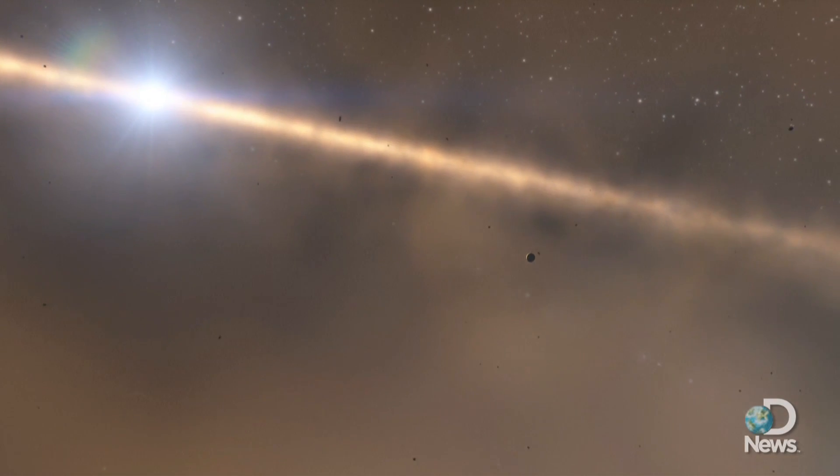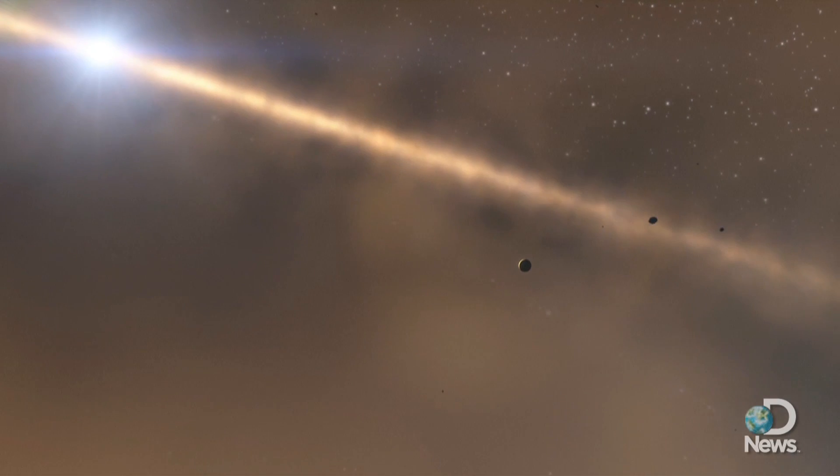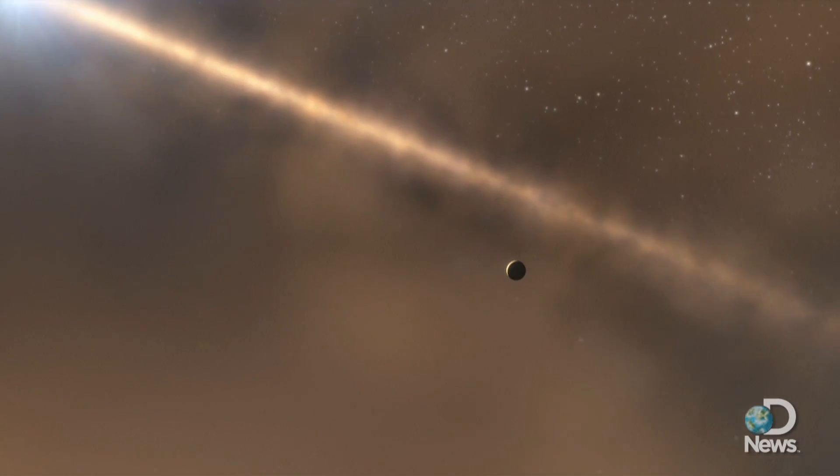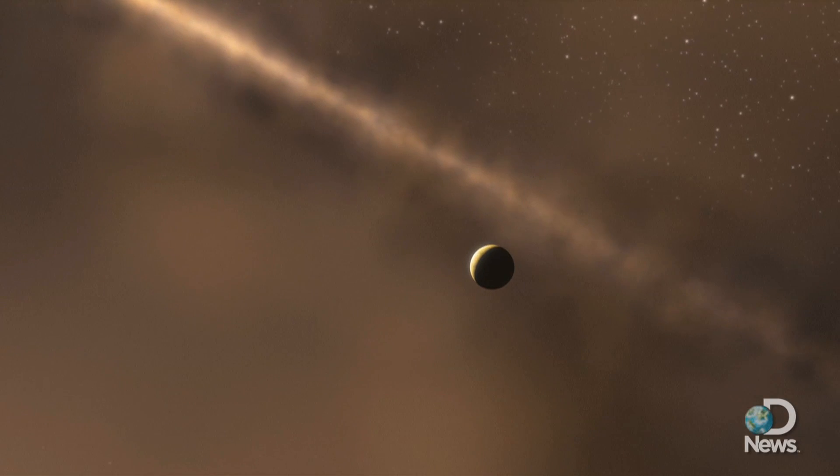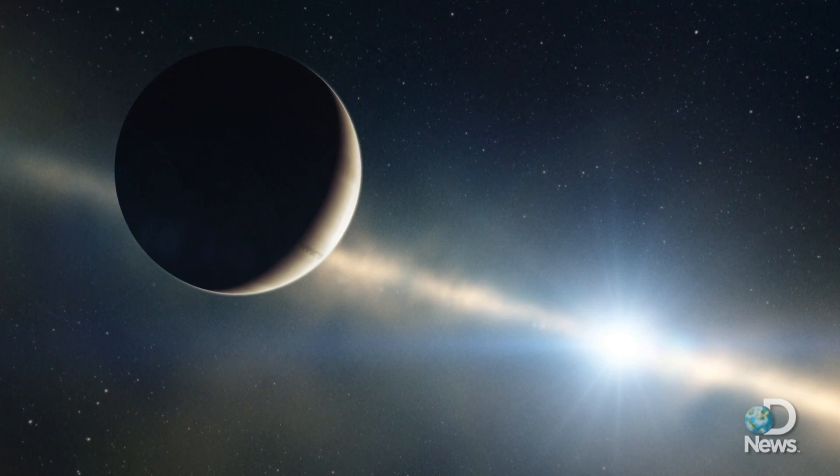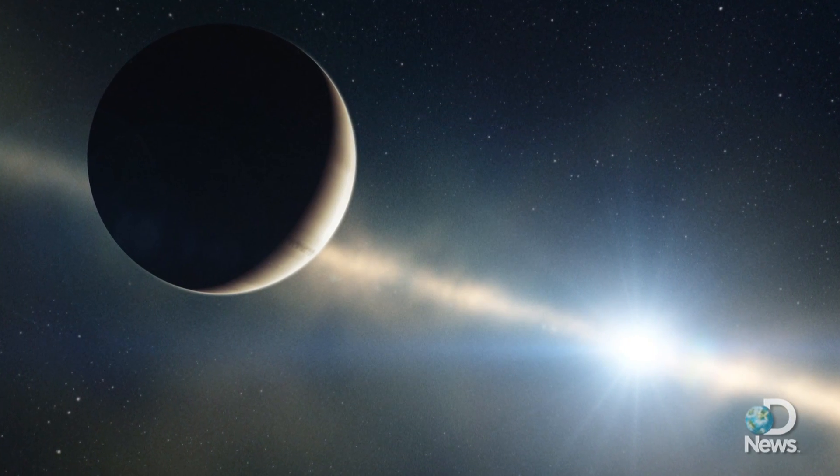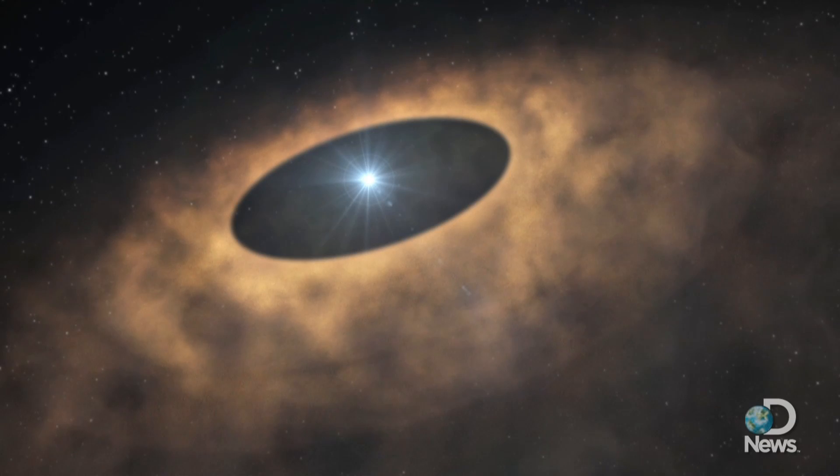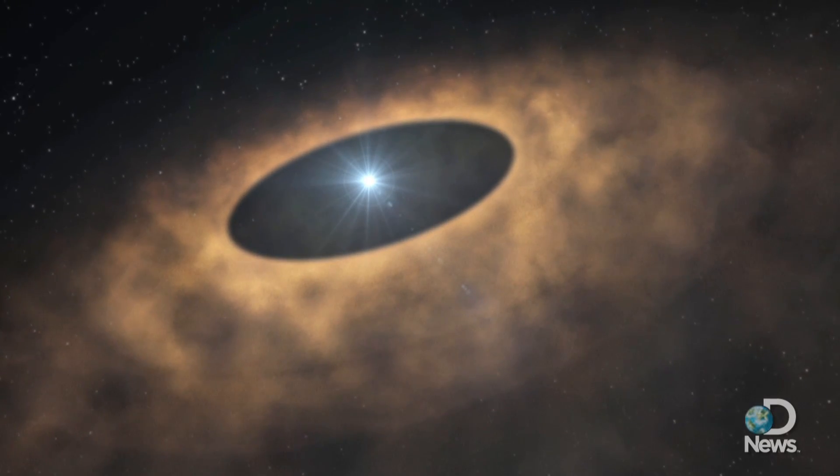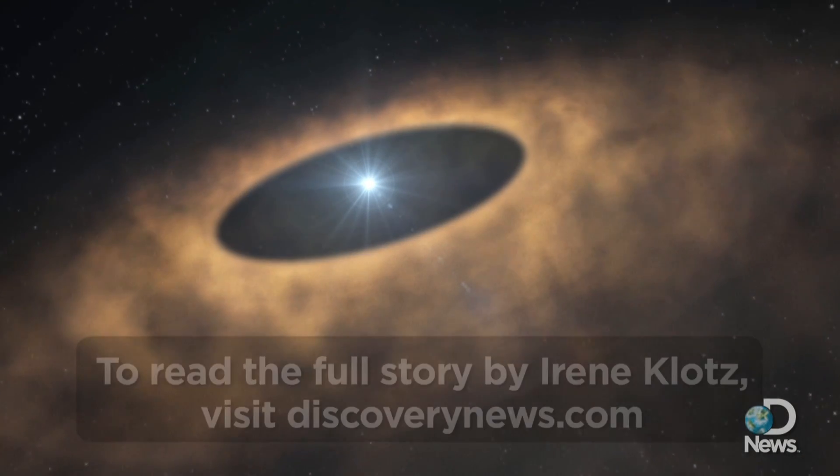That planet has the smallest orbit of any exoplanet that's been directly imaged so far, about as close to its star as Saturn is to our Sun. Scientists said its formation could be similar to how gas giants formed in our solar system. But at 4.6 billion years old, the Sun's dusty debris disk is long gone.